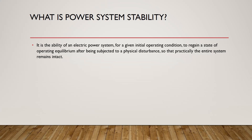Physical disturbance means that our power system is subjected to disturbances such as variation in mechanical input power to our generator, or a change in load — an increase or decrease in load. Another disturbance is a fault on transmission lines. We examine whether our system is stable or not after being subjected to these different types of physical disturbances.